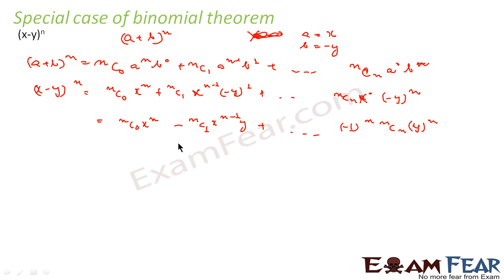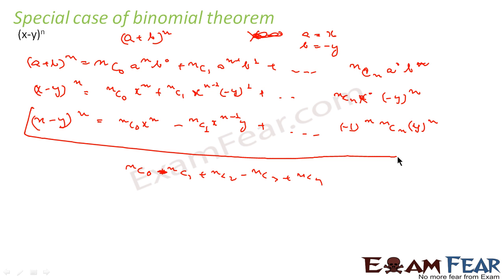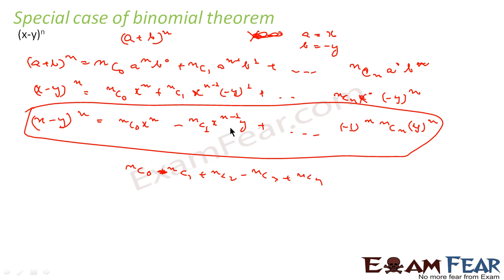So the difference here is you get alternating minus and plus signs. The pattern is nc0 · x^n − nc1 + nc2 − nc3 + nc4 and so on. So x minus y to the power n gives this alternating pattern, with the only difference from (x+y)^n being the alternating plus and minus signs.